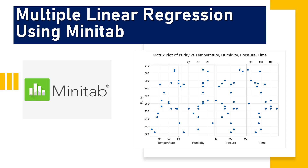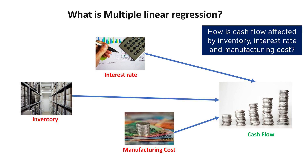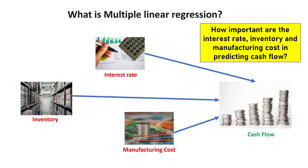Multiple linear regression in Minitab simplifies the exploration of relationships between a continuous response variable and multiple predictors. Multiple regression examines the relationship between a continuous response variable, Y, and more than one predictor variable, X. By examining factors such as inventory and manufacturing costs, multiple linear regression unveils their impact on cash flow, facilitating informed financial planning. Understanding the significance of variables like inventory and interest rates in predicting cash flow is vital for effective financial management.